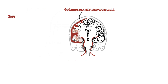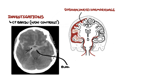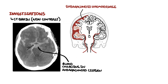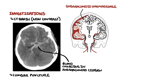Investigations for someone with suspected subarachnoid hemorrhage include a non-contrast CT brain, best performed within 12 hours, which will show blood collecting in the subarachnoid space. Lumbar puncture can also be performed if the CT brain is not definitive. Lumbar puncture will show increased pressure and xanthochromia — the presence of bilirubin in the cerebrospinal fluid secondary to breakdown of red blood cells, resulting in yellow discoloration.